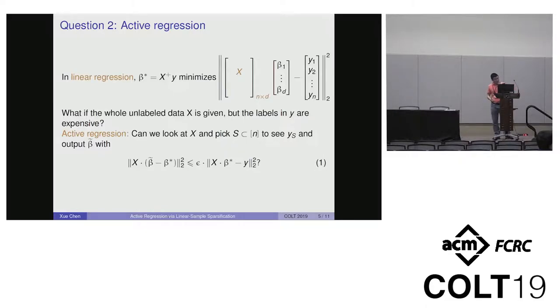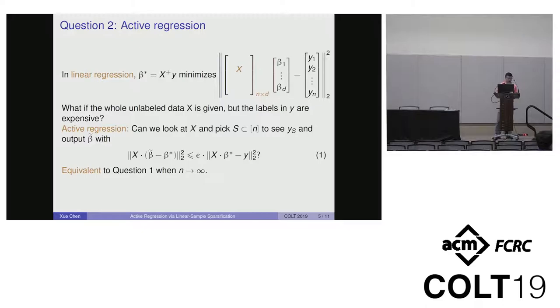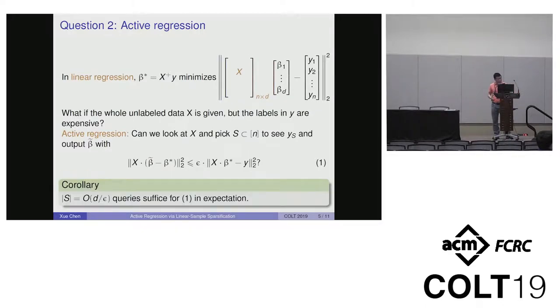Notice that this is equivalent to question one when N goes to infinity, so the vector becomes a signal. Our algorithm gives a firm answer to this question. We bound S to be in the order of D over epsilon, which suffices for the guarantee in expectation.